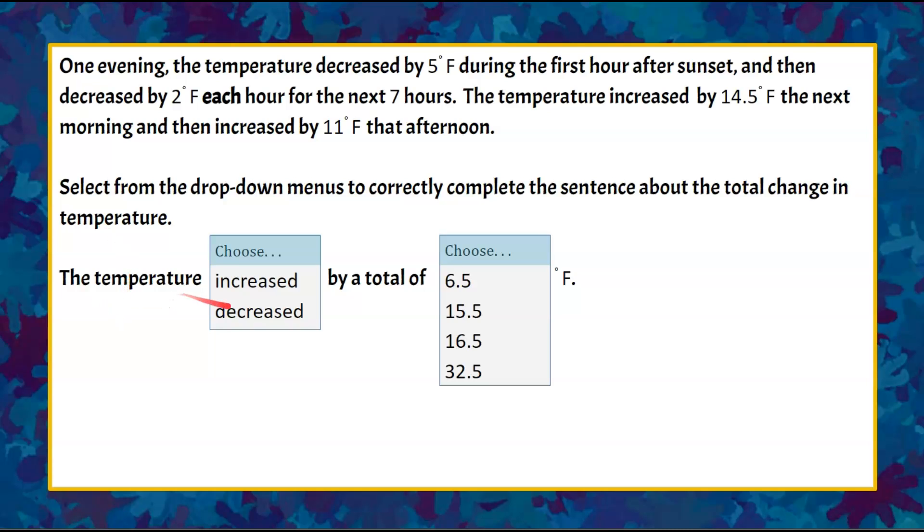The temperature...here's your drop-down box. I'm showing you both because you can't interact with the video. If you drop down on the test, it would say increased or decreased, and you're going to pick one. The temperature increased or decreased by a total of...and you're given four numerical values to pick from. Pause the video, do your best work, and then come back to check your solution. Good luck.